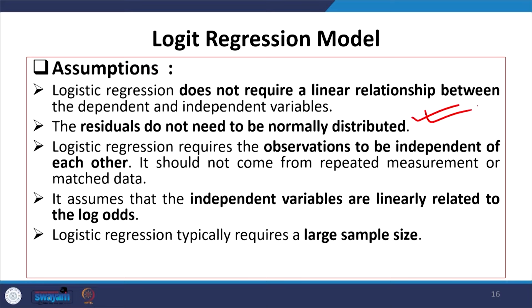Logistic regression requires the observations to be independent of each other — it should not come from repeated measurements or panel data. It assumes that the independent variables are linearly related to the log of odds. When the odds are taken as log, the distribution becomes linear. Logistic regression typically requires large sample data.